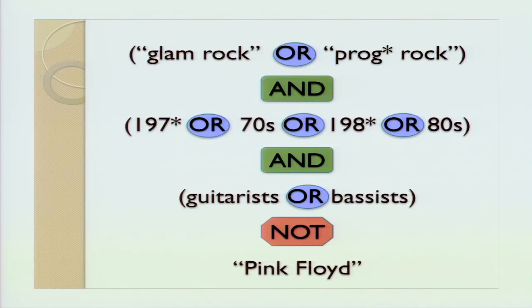So let's put all of this together into a master search. Let's say you're interested in guitarists or bassists that played in glam rock or prog rock bands during the 70s and 80s, but you're sick and tired of hearing about Pink Floyd. Put "glam rock" together with quotation marks, "prog rock" together. Prog* with an asterisk will find progressive or prog rock. 197* will find any year in the 1970s or just the 70s. And, of course, NOT Pink Floyd.